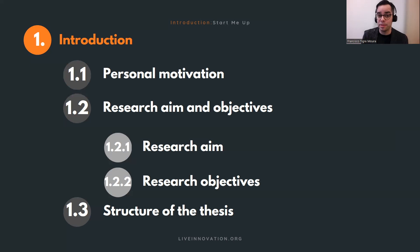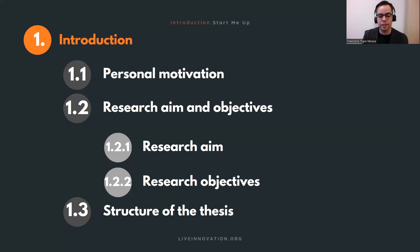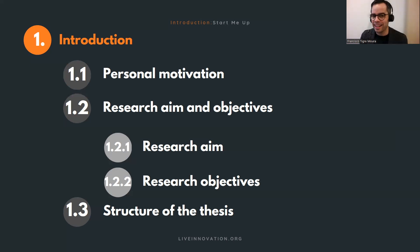Then you have your research aim and objectives — the core section telling the reader what the entire document is about. You lay out the research aim, then the list of objectives. The final part is the structure of the thesis, which you can leave to the end — it's one or two paragraphs telling the reader everything they'll find in the following sections. Those are my main recommendations for the introduction chapter.